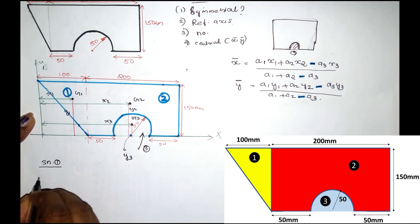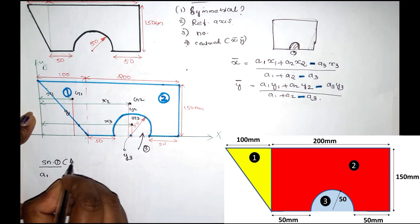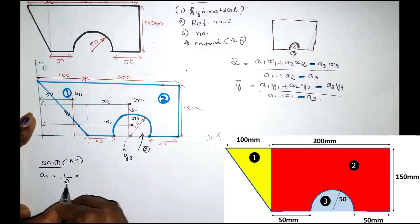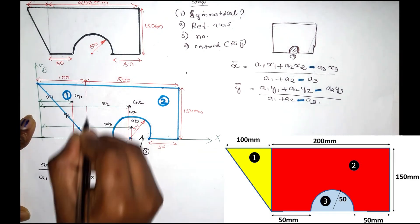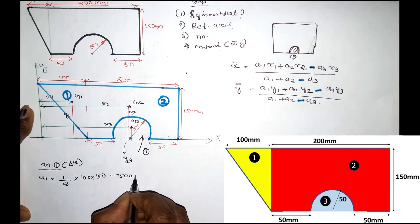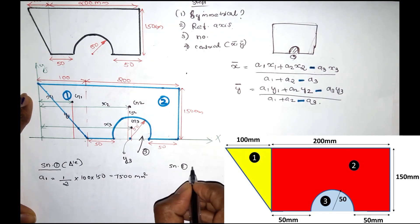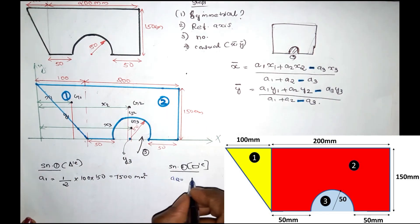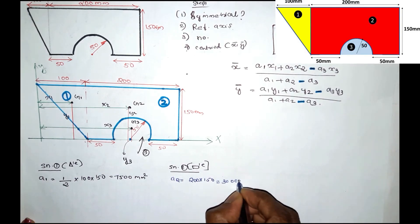Section 1 is A1 — the area of section 1, which is the triangle. Triangle area = half × B × H = half × 100 mm × 150 mm = 7500 mm². Section 2 is the rectangle. A2 = 200 × 150 = 30,000 mm².